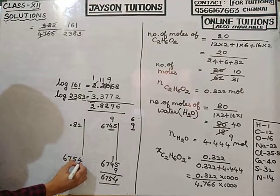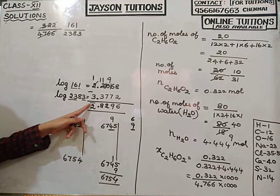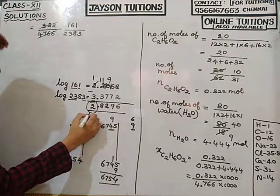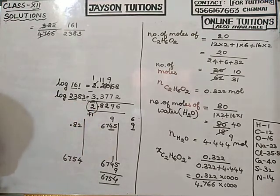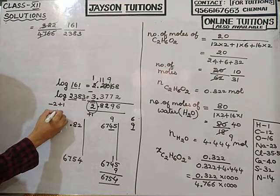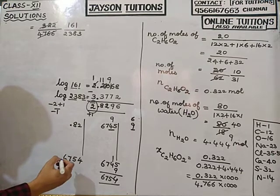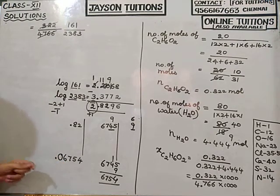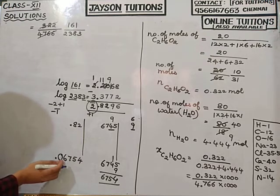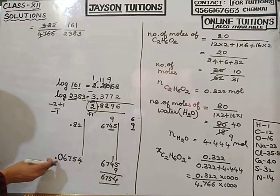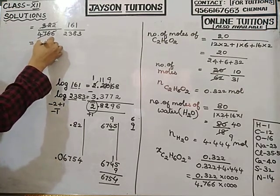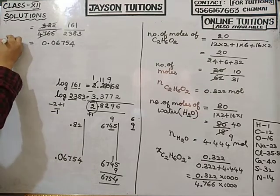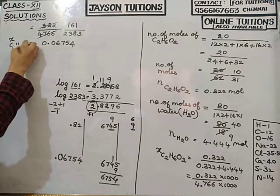The characteristic is 2̄; adding 1 gives 2̄ + 1 = −1. Minus 1 means I place the decimal as 0.0 before the digits. So the answer is 0.06754. This is the mole fraction of C₂H₆O₂.